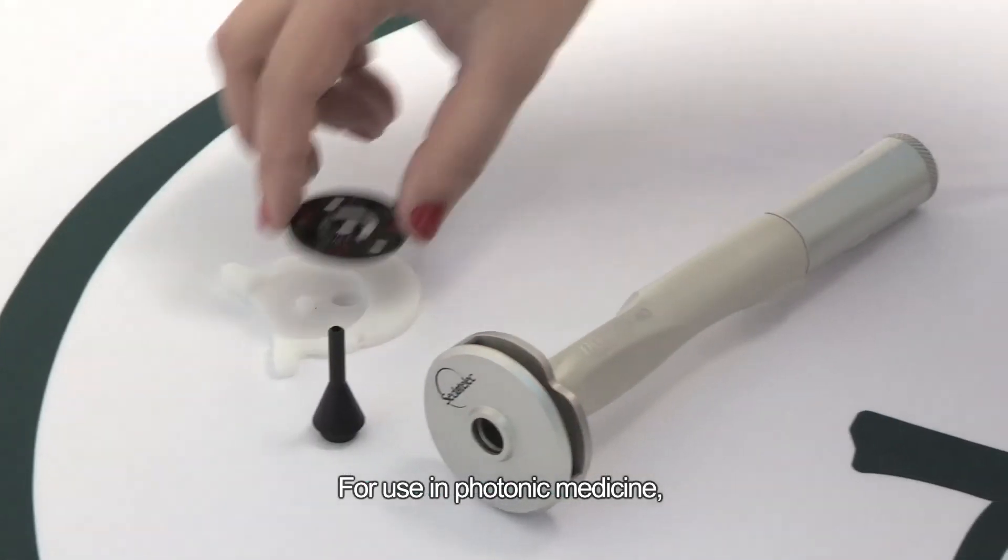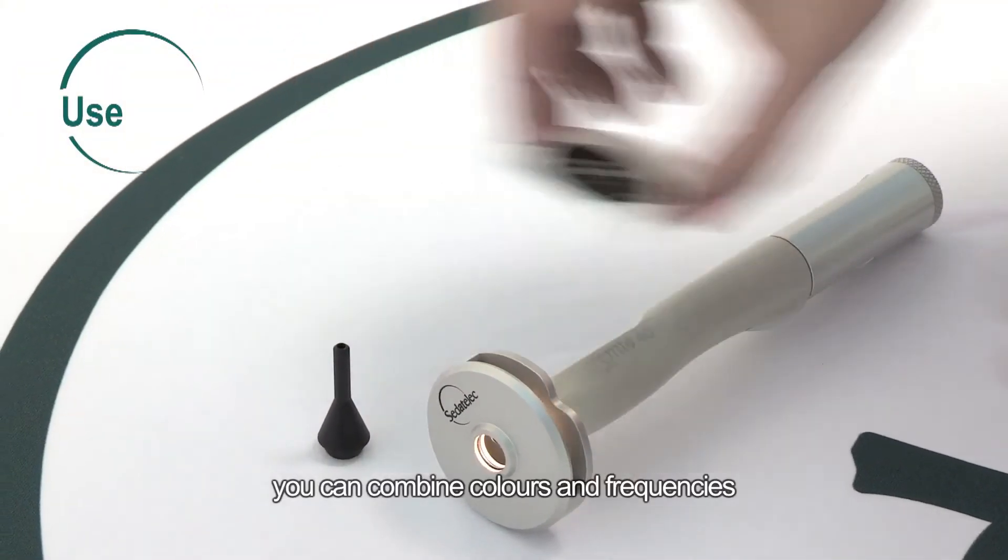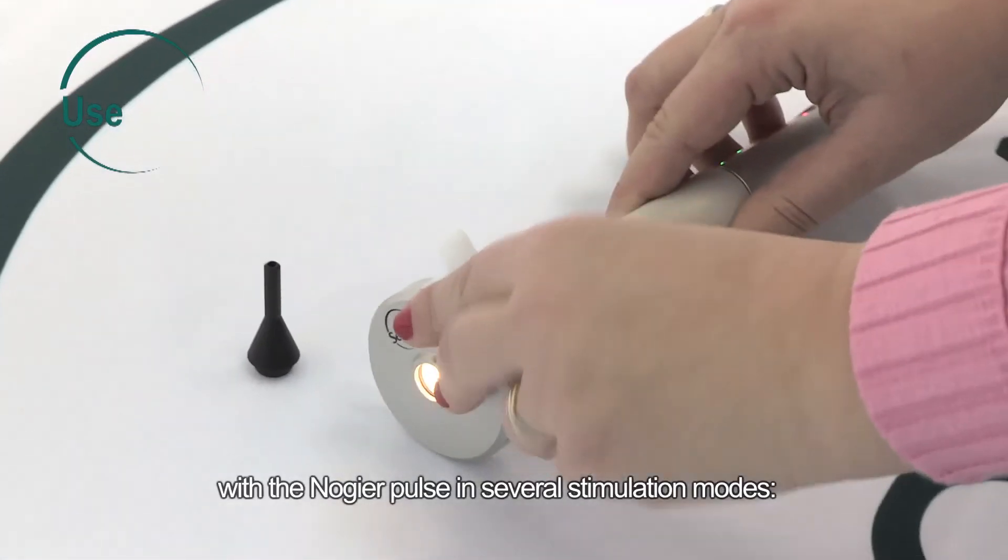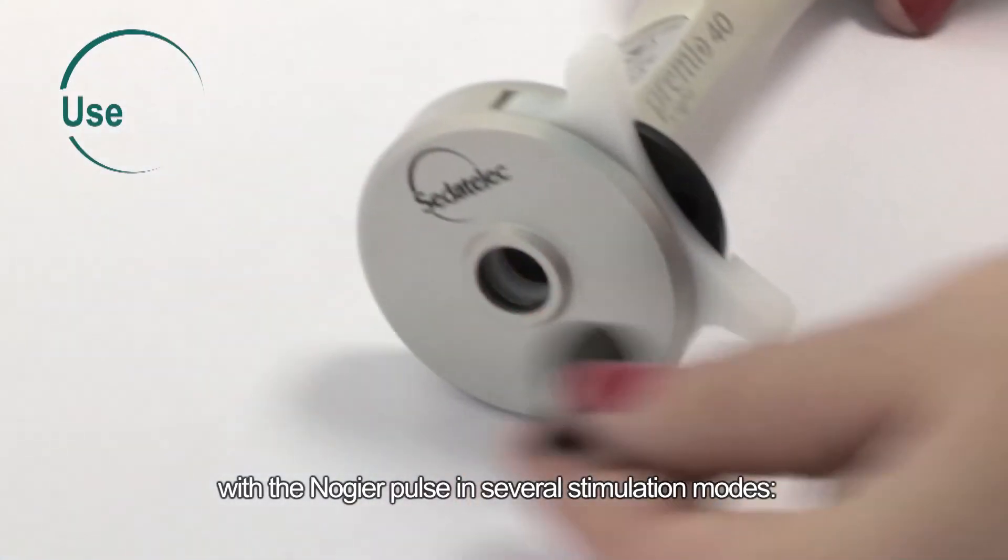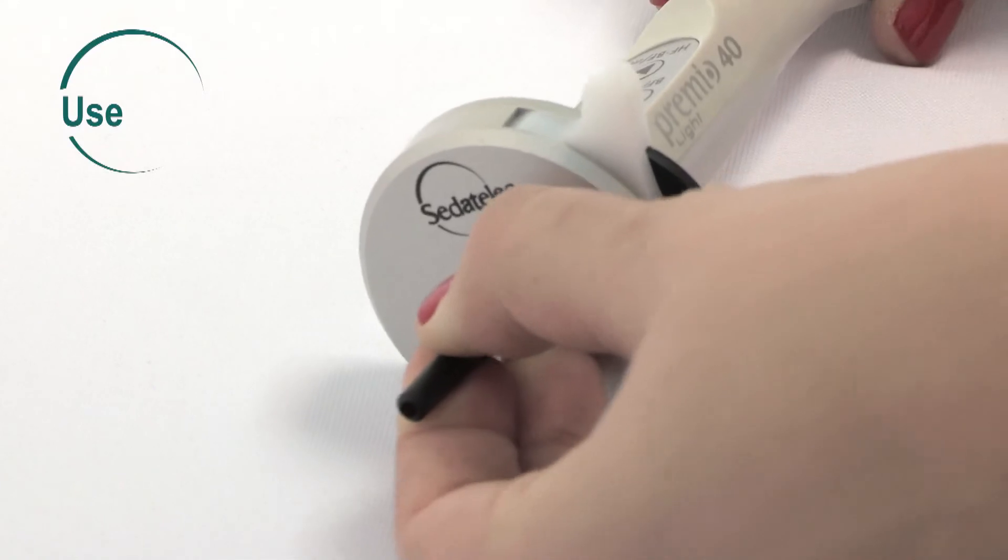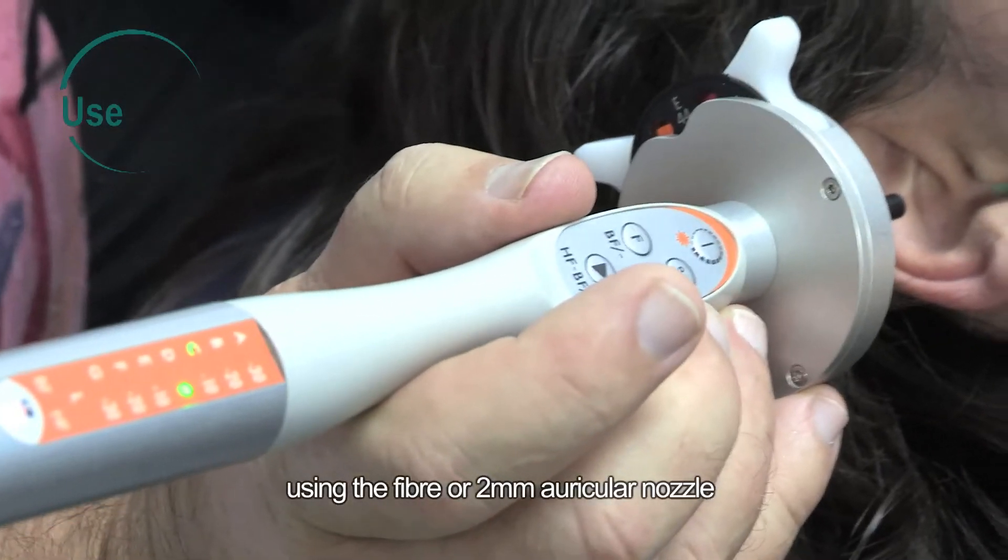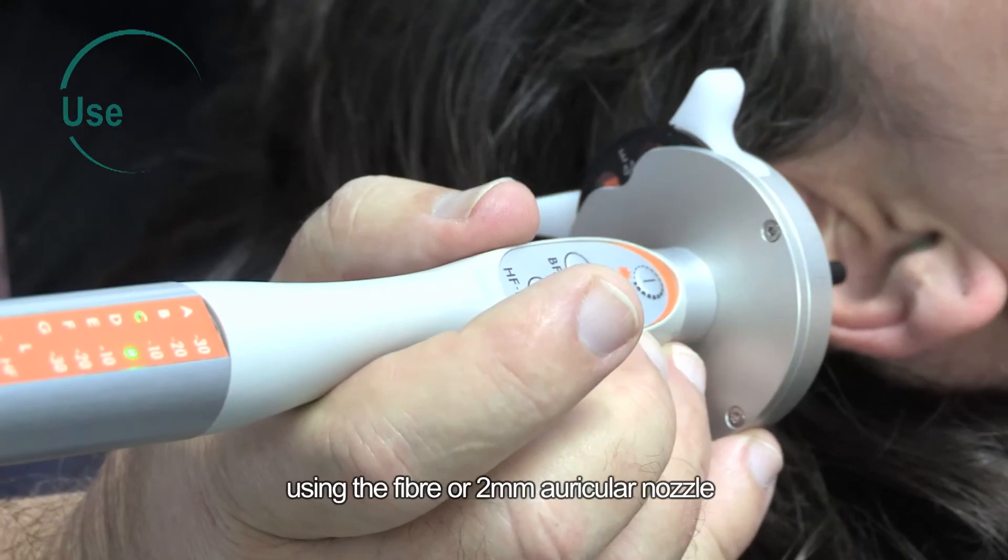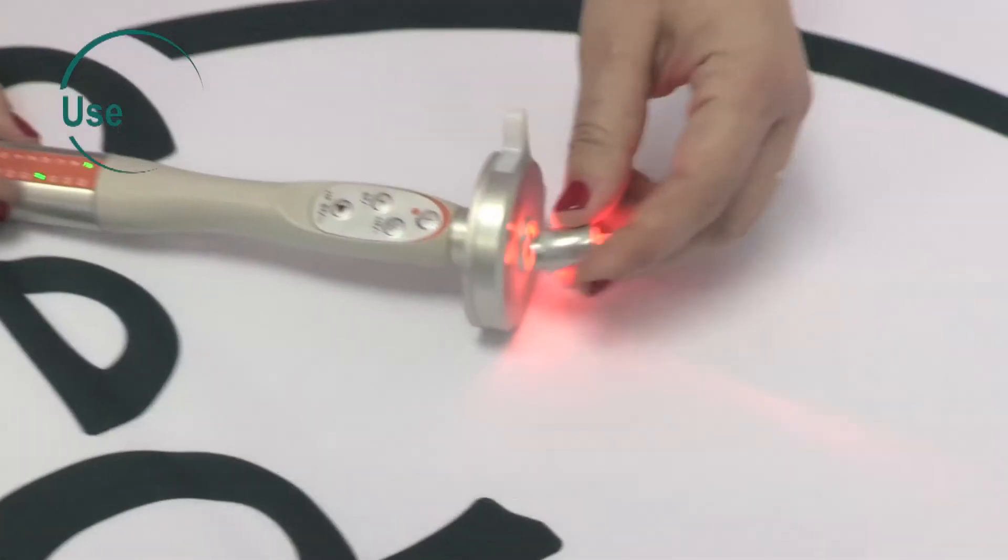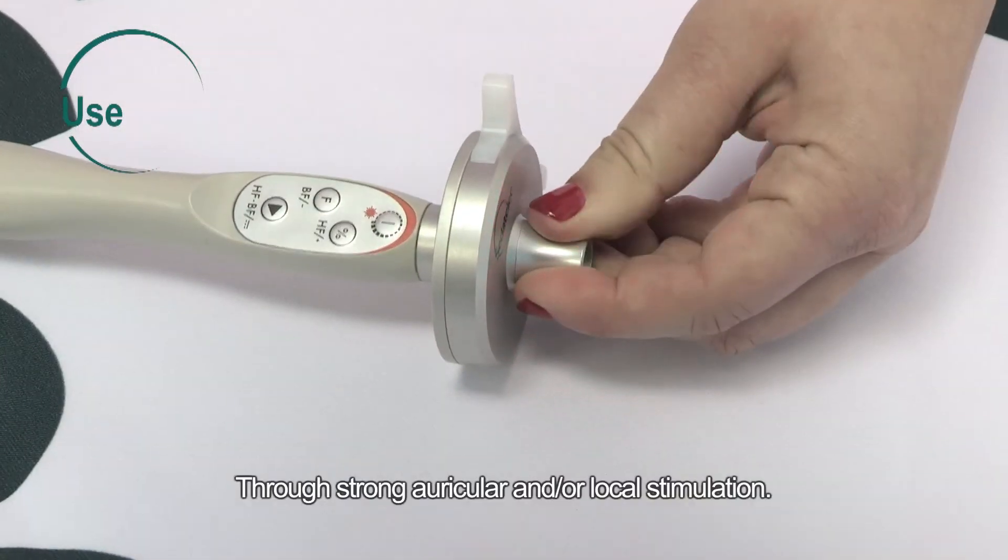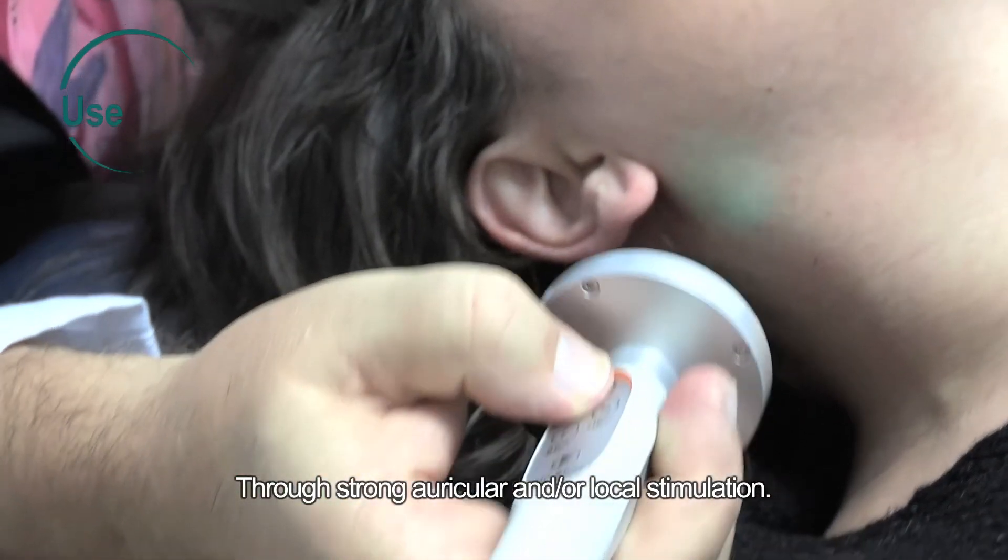For use in photonic medicine, you can combine colors and frequencies with the Nogia pulse in several stimulation modes. Through fine stimulation of the ear, use the fiber or two millimeter ocular nozzle to find the Rack-Vas. Through strong auricular or local stimulation.